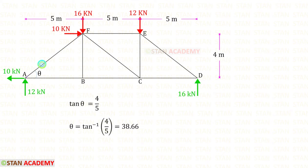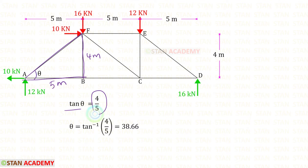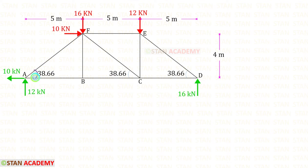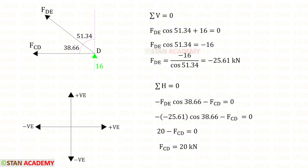Before finding member forces, we need to find the angles. Let us take this triangle. In this triangle, let us find the angle theta. Tan theta is opposite side by adjacent side. The opposite side is 4 meters and the adjacent side is 5 meters. So it will be 4 upon 5, and theta will be 38.66°. If this angle is 38.66°, the other diagonal angles also should be 38.66°. The complementary angle is 90 minus 38.66, which gives 51.34°.